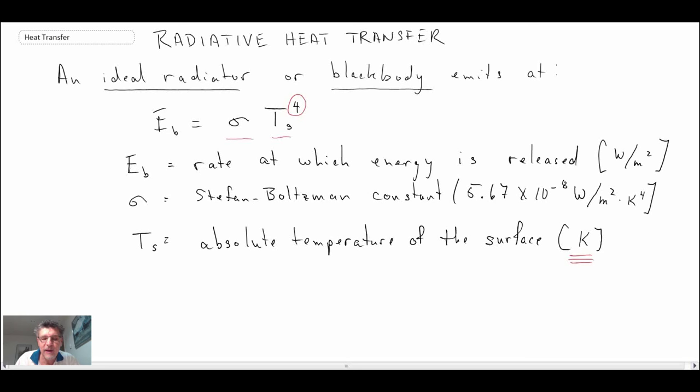Now, an ideal radiator, that's kind of a theoretical maximum that an object would emit at a given temperature. In reality, no objects emit at an ideal radiator. They emit at a slightly lower value than that. And in order to characterize that, we have a term called the emissivity. So let me show you the equation for how a real object would respond.